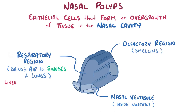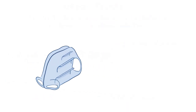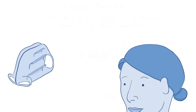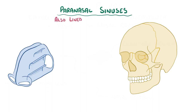Lining the respiratory region are epithelial cells that create mucus to moisten the air and trap pathogens. There are also air-filled spaces within the skull on either side of the nose called paranasal sinuses, and these are lined by the same layer of epithelial cells as the respiratory region.